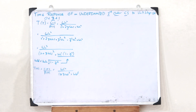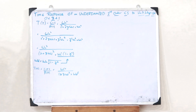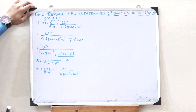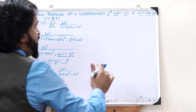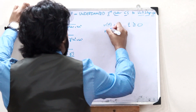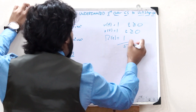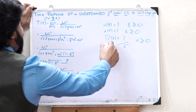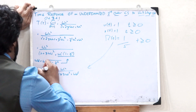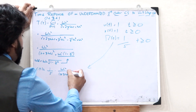We are giving a unit step signal as the input to this control system. A step signal is r(t) = 1 for t ≥ 0, so R(s) = 1/s. Substituting this, we get C(s) = (1/s) · ωn² / [(s + ζωn)² + ωd²]. To find the time response we now need the inverse Laplace transform of this expression.